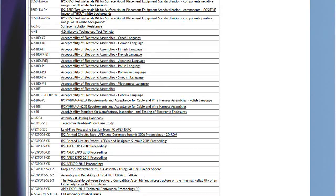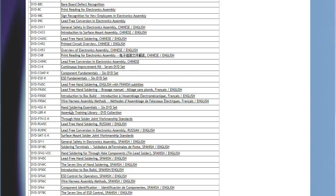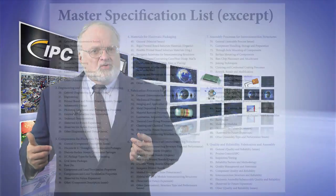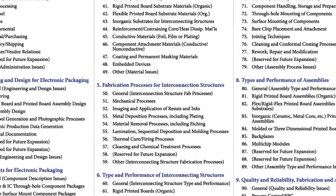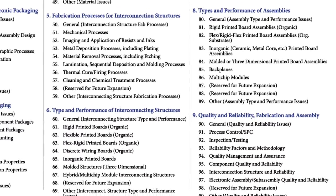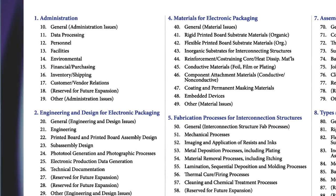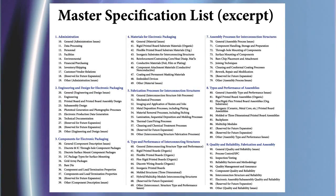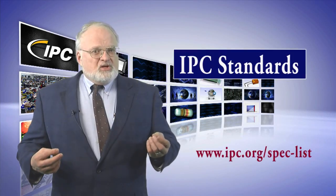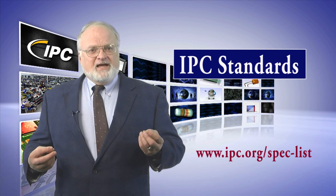So it's good to know how the first and second numbers, at least, of our current four digit numbering system are assigned. The second good reference document you should know about is shown in this extract from the Technical Advisory Executive Committee, which shows how the first and second numbers of our current numbering system are assigned.